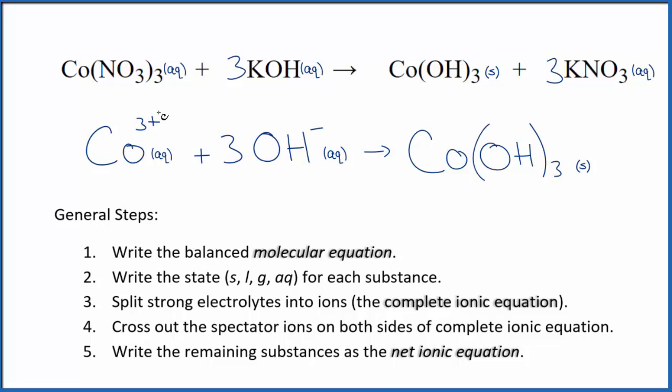And you'll note that charge is balanced. We have a three plus here, three times one minus, that's three minus. So that all adds up to zero, net charge of zero. Over here, the cobalt 3 hydroxide, that's neutral, net charge of zero. Charge is conserved. And if you count the atoms up, they're balanced too.